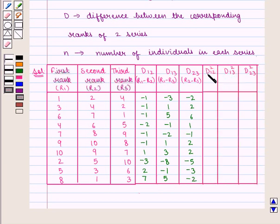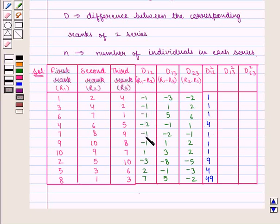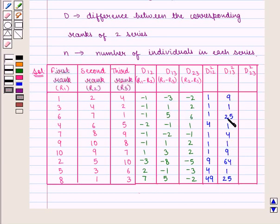Now we find the values of D12 squared, D13 squared, and D23 squared. D12 squared: 1, 1, 1, 4, 1, 1, 1, 9, 4, and 49. D13 squared: 9, 1, 25, 1, 4, 1, 9, 64, 1, and 25.